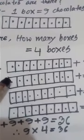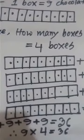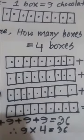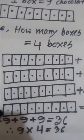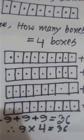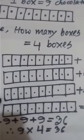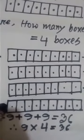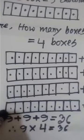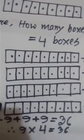So, 9 plus 9 equals 18. 18 plus 9 equals 27. 27 plus 9 equals 36. In 3 boxes, how many chocolates? 27 chocolates. And the 4th box also has 9 chocolates. So, 27 plus 9 equals 36.